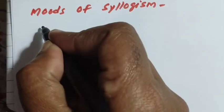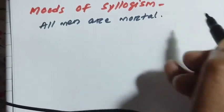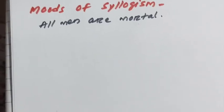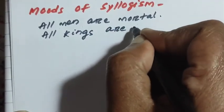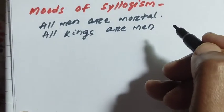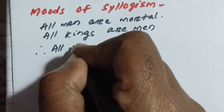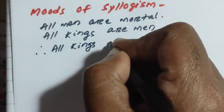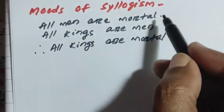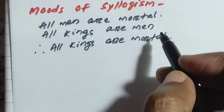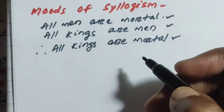Here is a concrete example: 'All men are mortal' — this is a universal affirmative proposition. 'All kings are men' — this is also a universal affirmative proposition. Therefore, 'All kings are mortal.' This is an argument with three propositions: the major premise, the minor premise, and the conclusion.